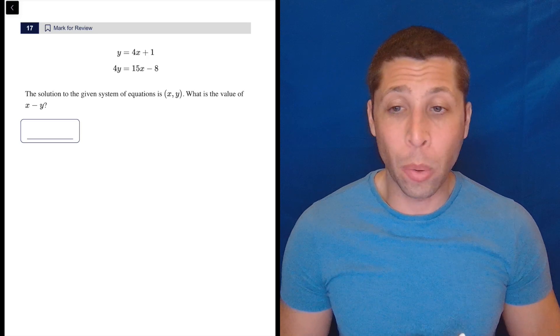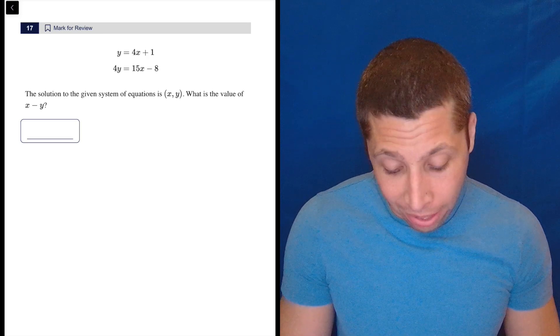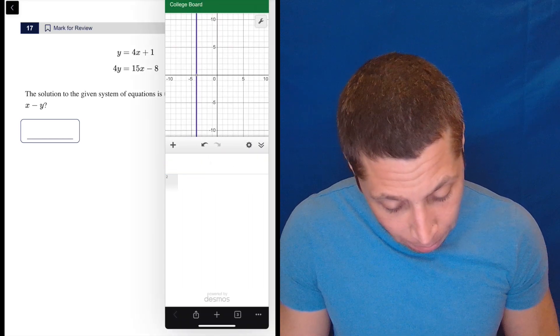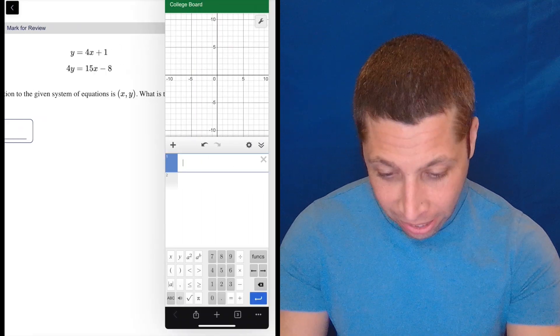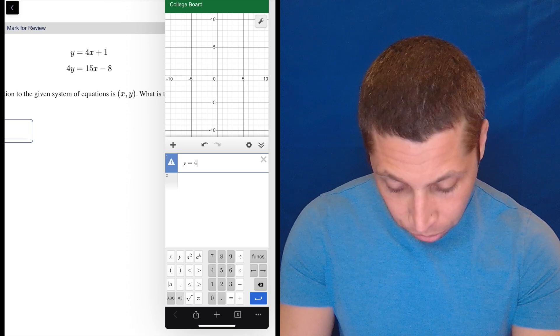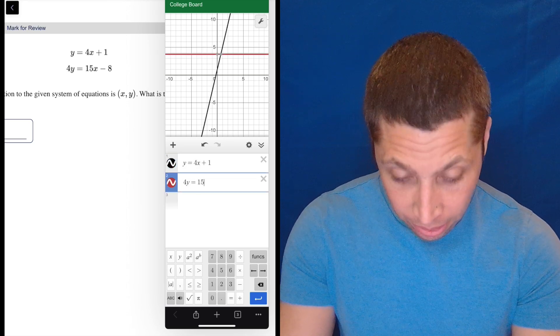Here I have yet another system of equations. Now the top equation is not so bad, but I don't know, I'd still go to Desmos and type it in. And you can see that was the work from my last system of equations in there. So let's just do it. Y equals 4X plus 1 and 4Y equals 15X minus 8.